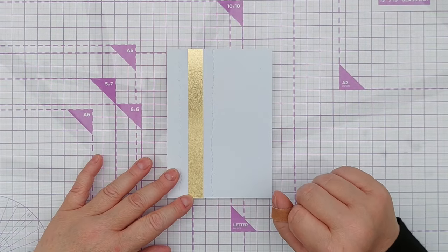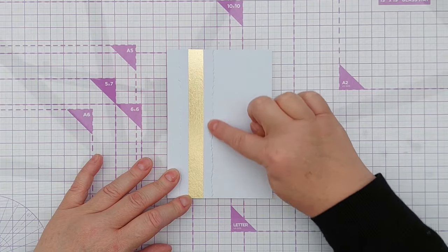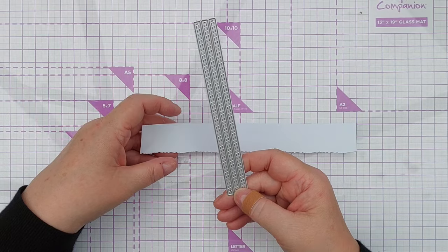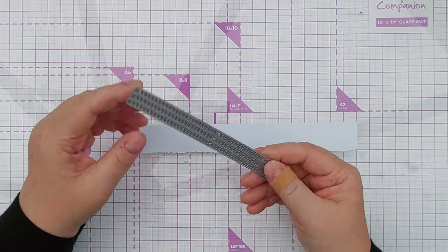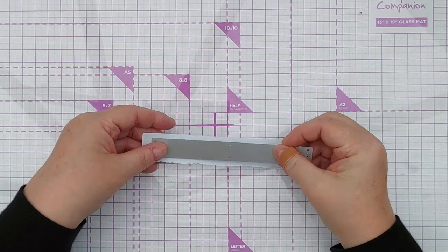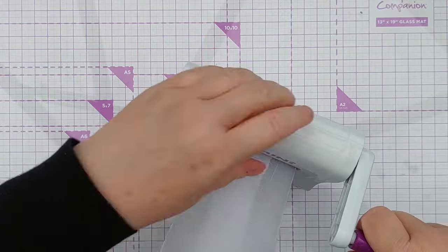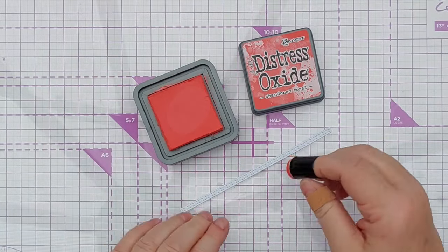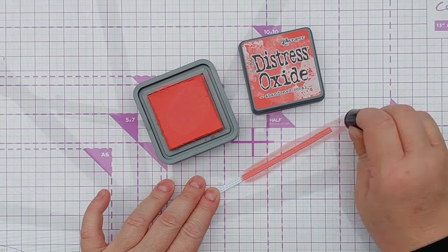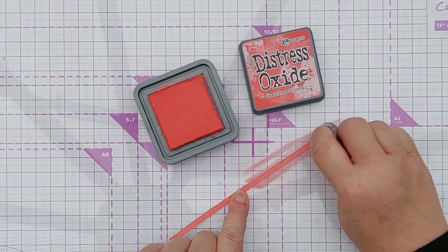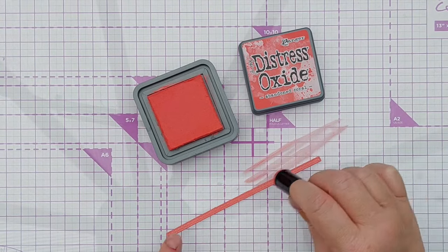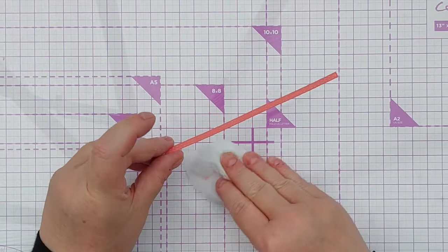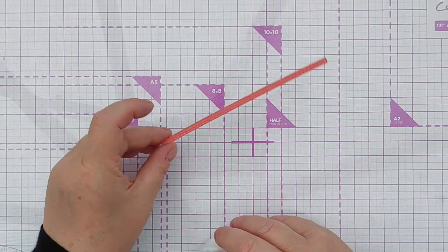So that's already looking very Christmassy to me. We've got a nice bit of white and gold. Now I'm going to add some color. I'm going to cut some strips using these stitched strip dies from white cardstock and then color it. For my color I'm using Abandoned Coral distress oxide—it's almost red but slightly not, a bit pinky with a bit of a warm orangey tone.